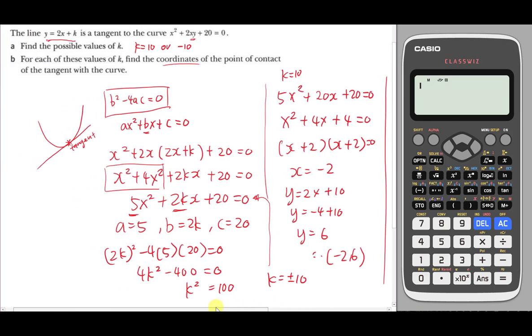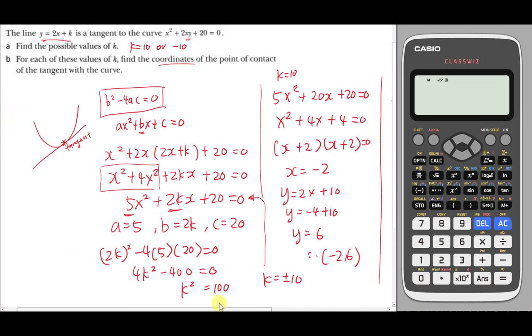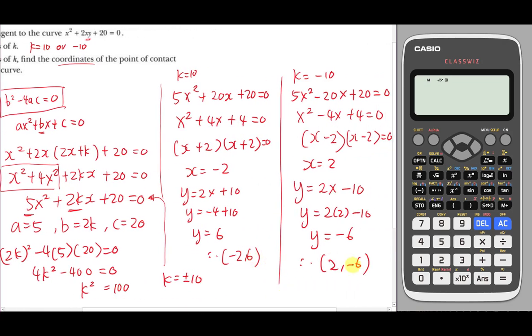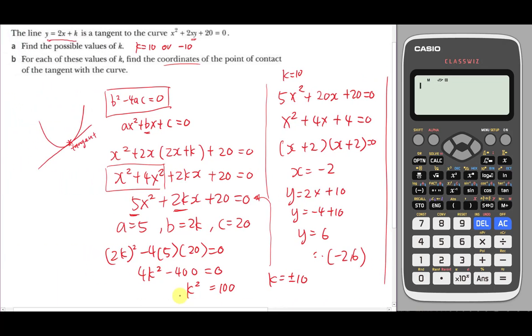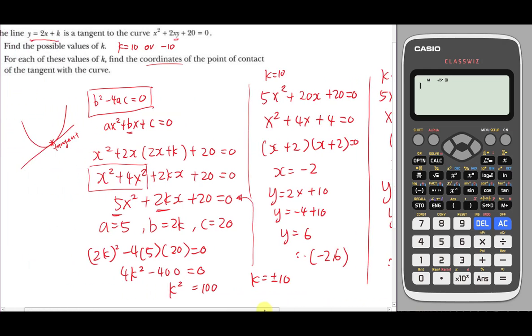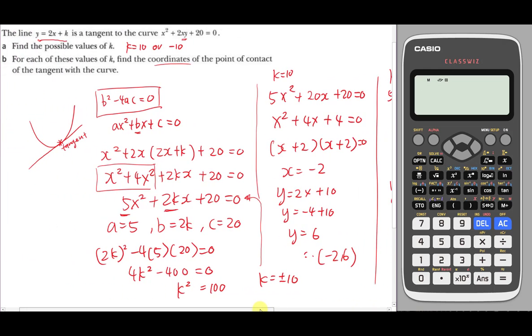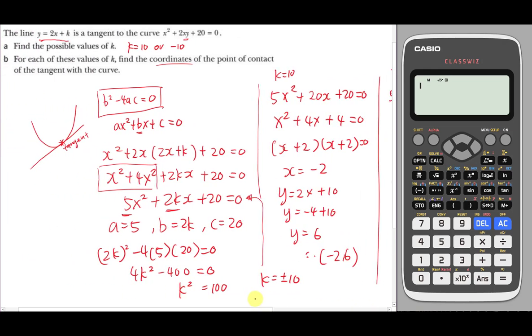Therefore you will have about two different coordinates which will touch the curve at one point. This is how we do this kind of question. I hope this short video can help you understand how to find coordinates, especially in part b, how to find the coordinates where they contact the curve at one point. I will see you guys in the next video. Bye bye.